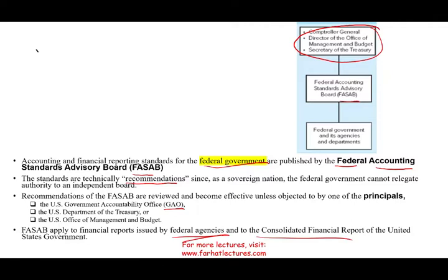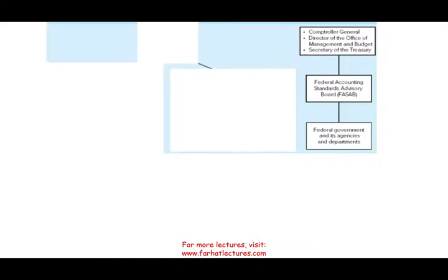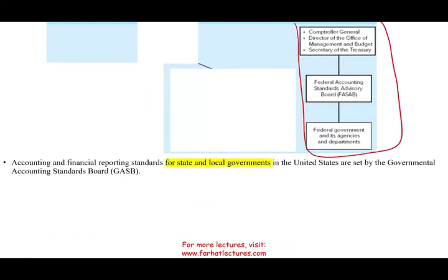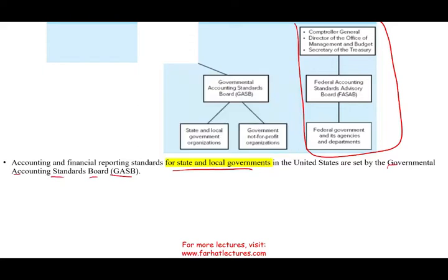FASAB applies to financial reports issued by federal agencies and to the consolidated financial report of the United States government. This topic is not really covered on the CPA exam or in most governmental and not-for-profit accounting courses, because it covers the federal government specifically. Now let's move to accounting for state and local government, which is set by GASB — the Governmental Accounting Standards Board.